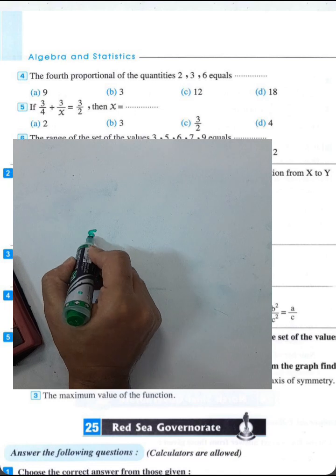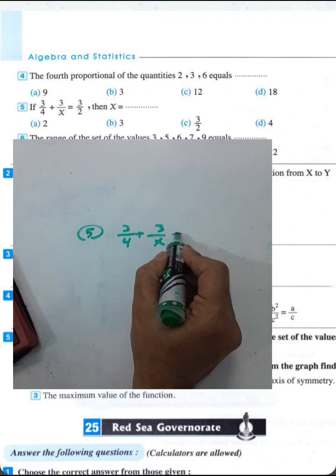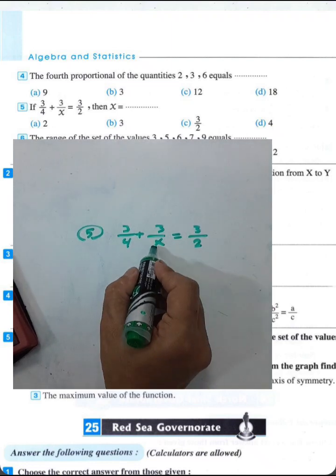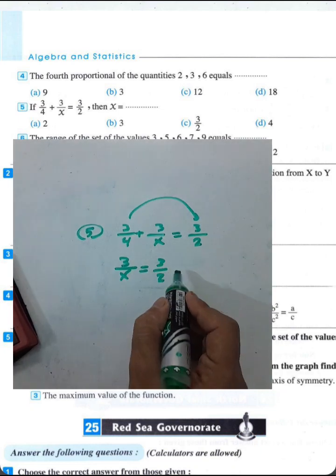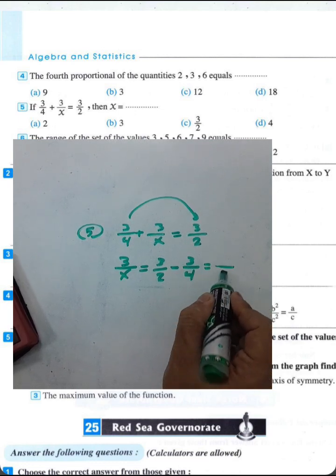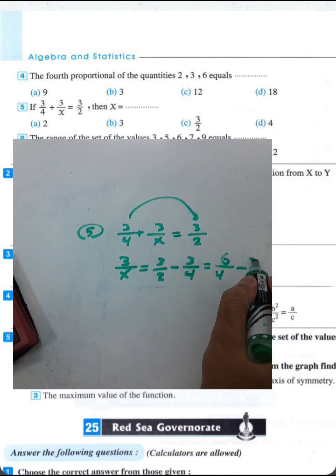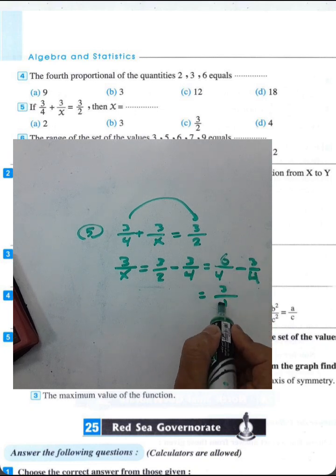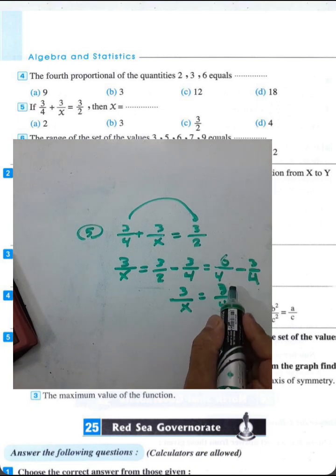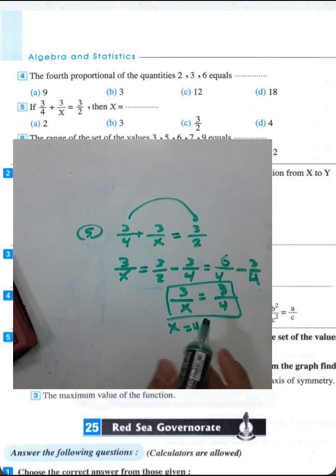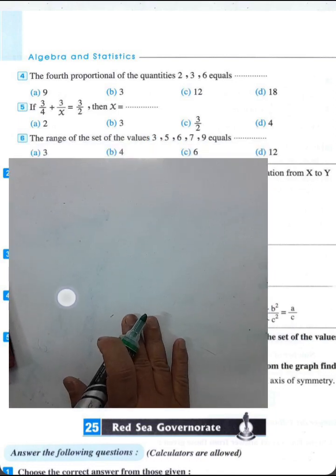Question number 5: if 3/4 plus c/x equals c/2, find the value of x. We solve: 3/x equals c/2 minus c/4. The LCD is 4, giving 2c minus c over 4, which is c/4. So 3/x equals 3/4, and since numerator equals numerator, denominator equals denominator, so x equals 4.